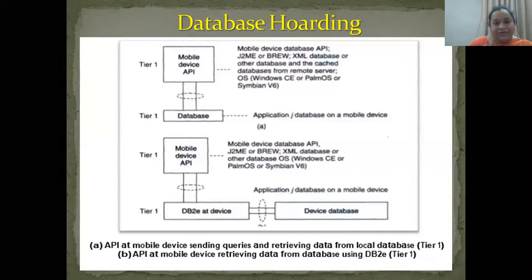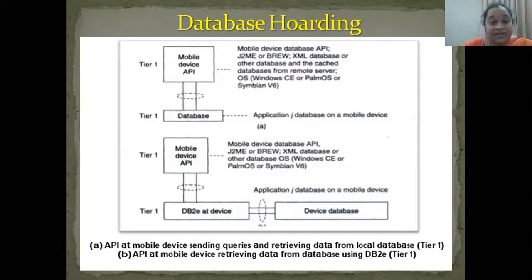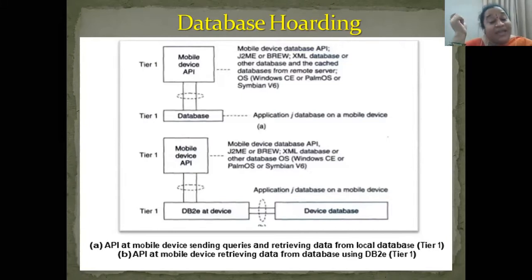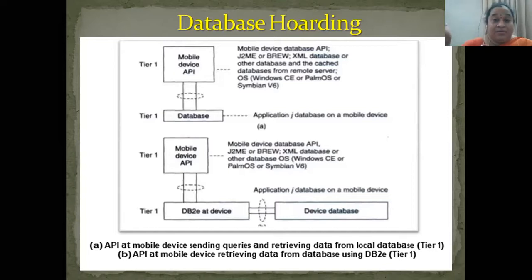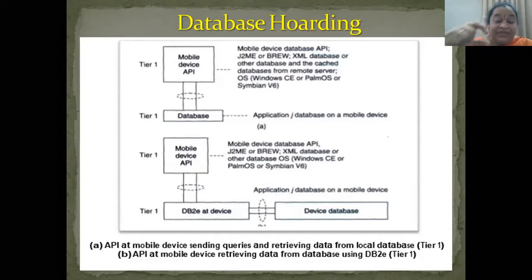We will see two types of architectures. We will see mobile device IP directly from the database. We will see how it is going to be using some databases called IBM DB2 Everyplace — there you are going to access what your device has been requiring. Two types of architectures: first is API at mobile device — that is, application programming interface at mobile device — sending queries and retrieving data from the local database. Mobile database is a particular application database. Every application has a database node. This particular database hoarding procedure — temporary holding of the data, temporary saving of the copy of data — is done for every application, caching some part of data whenever it is disconnected from the network.